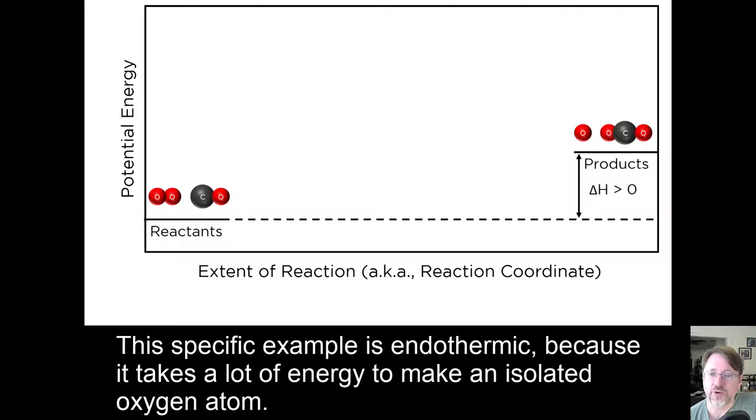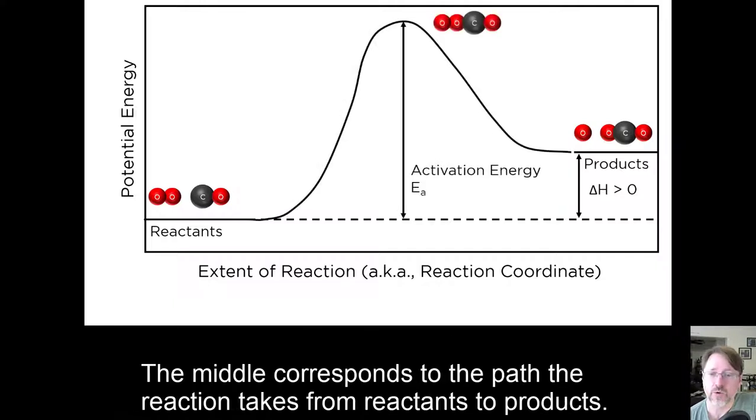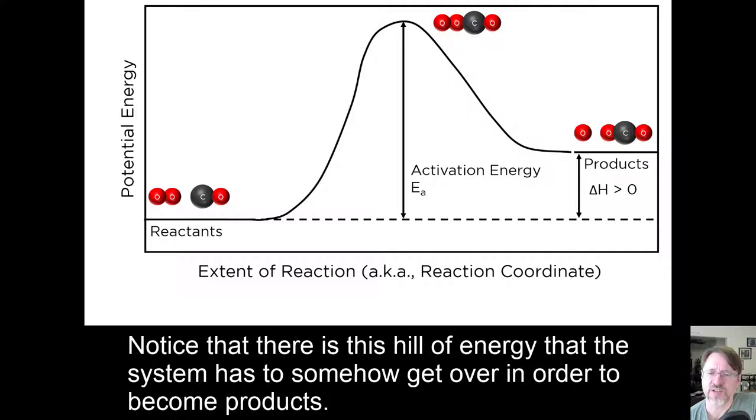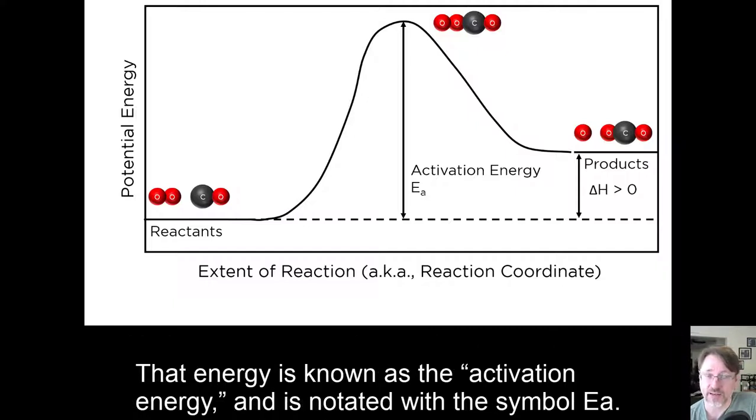This specific example is endothermic because it takes a lot of energy to make an isolated oxygen atom. The middle corresponds to the path that the reaction takes from reactants to products. Notice that there is a hill of energy that the system has to somehow get over in order to become products. That energy is known as the activation energy, and is notated with the symbol E sub A.